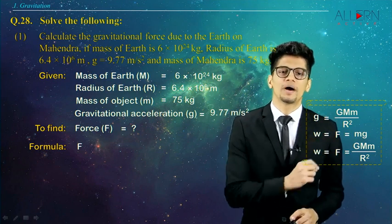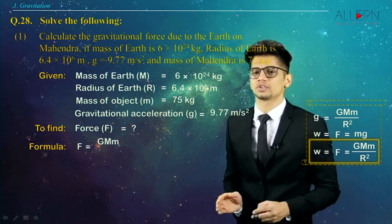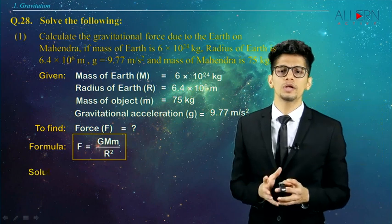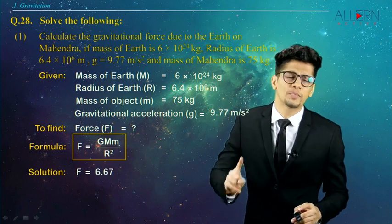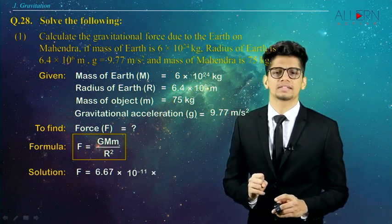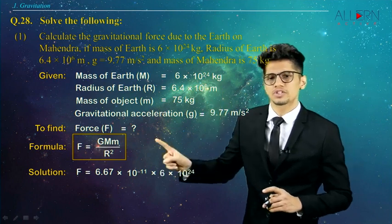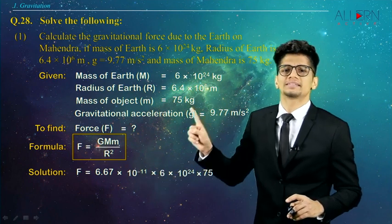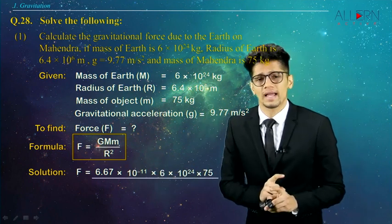So we write this formula in the formula section. Now when we substitute the values in the solution: capital G is 6.67 × 10⁻¹¹, capital M is 6 × 10²⁴, small m is 75, and R² is (6.4 × 10⁶)². When we open the bracket, the answer we obtain is 40.96 × 10¹².